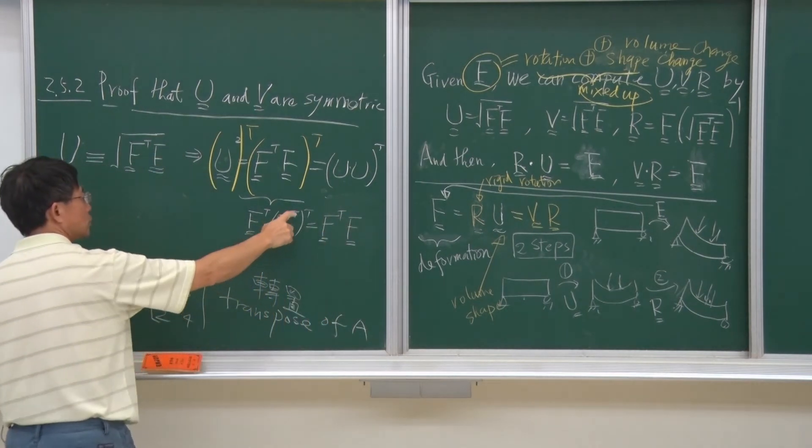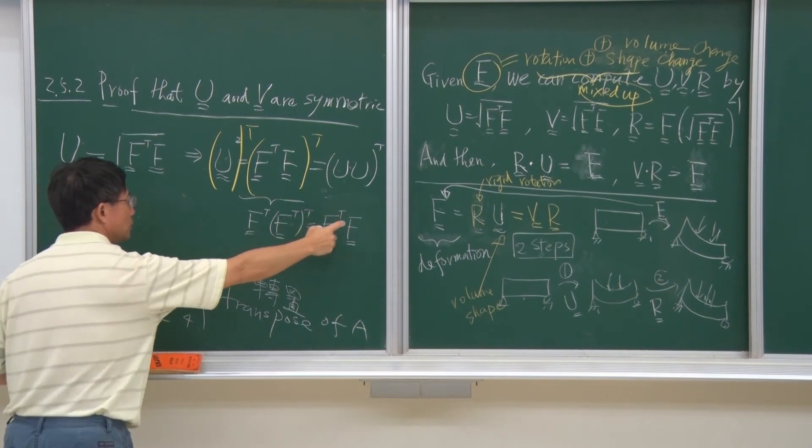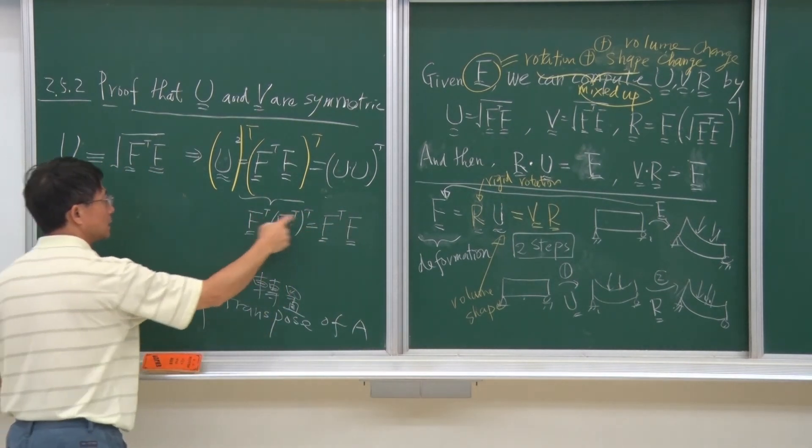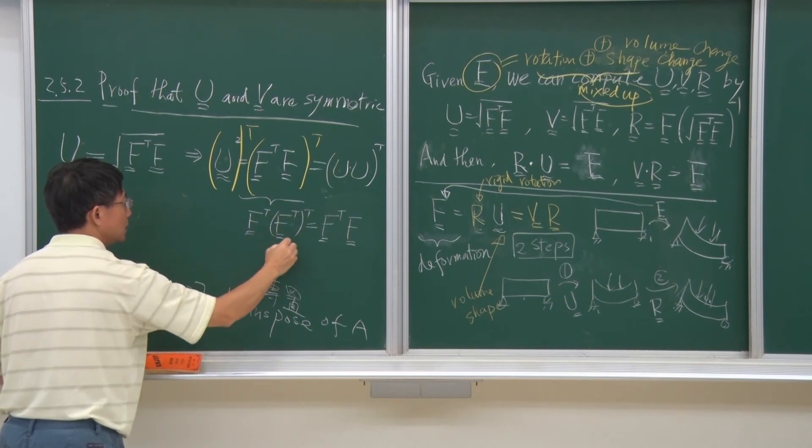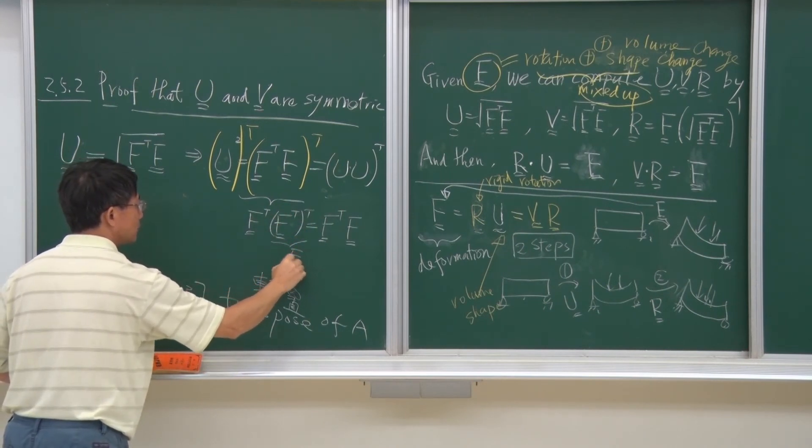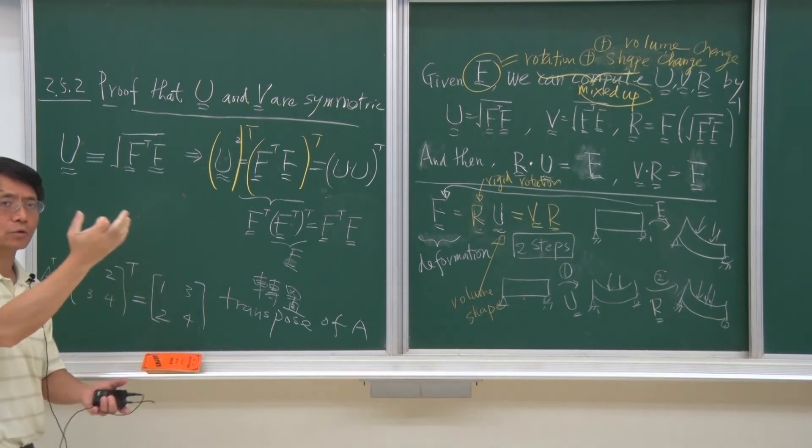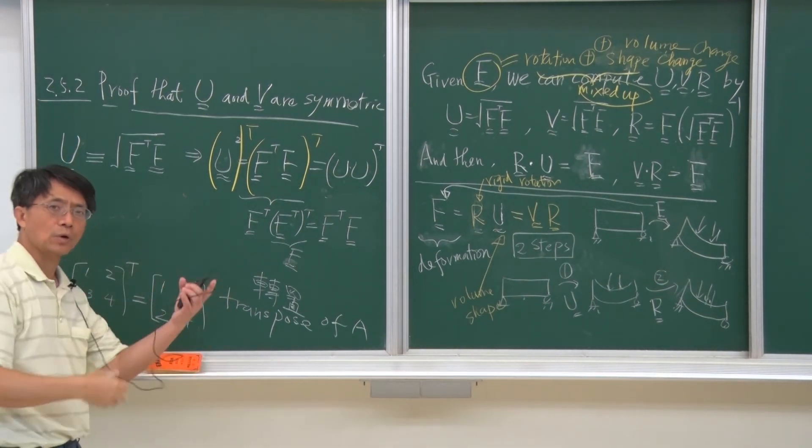Transpose of transpose will cancel out, so we don't have any transpose. This is this, and this one is equal F, because you transpose it once, and then you transpose it twice.